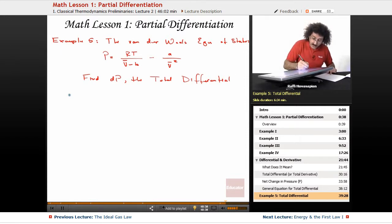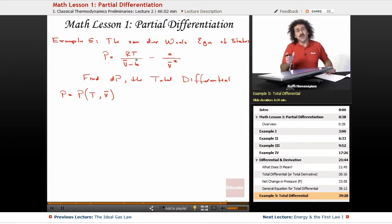Okay, well, let's be formal about this. P is a function of the variables T and V, right? So it's very important that you actually pick out your variables and know what your independent variables are. So in this case, R is a constant, B is a constant. So T and V are the only two variables. So P is a function of the two variables T and V.